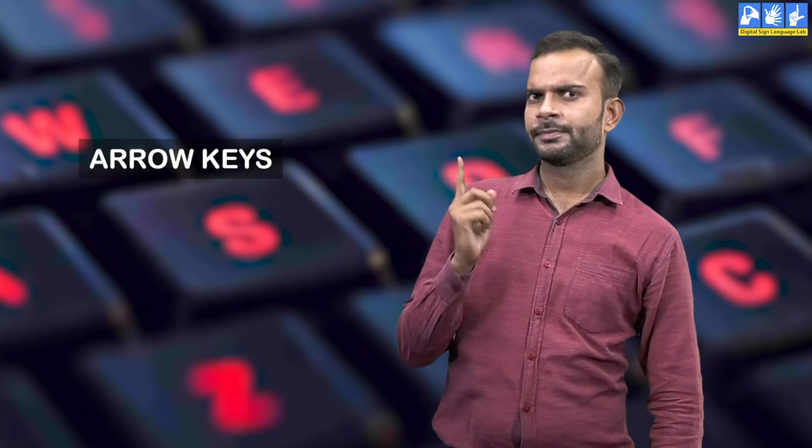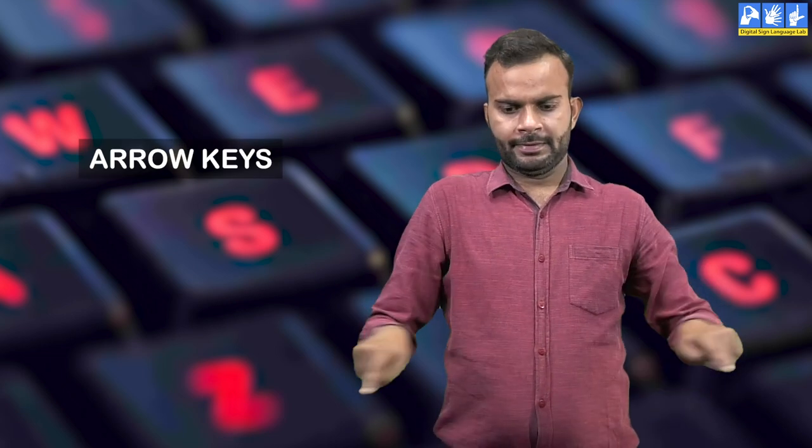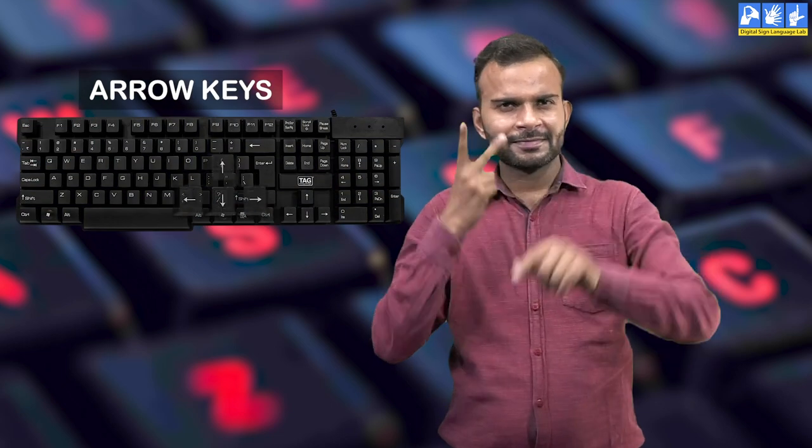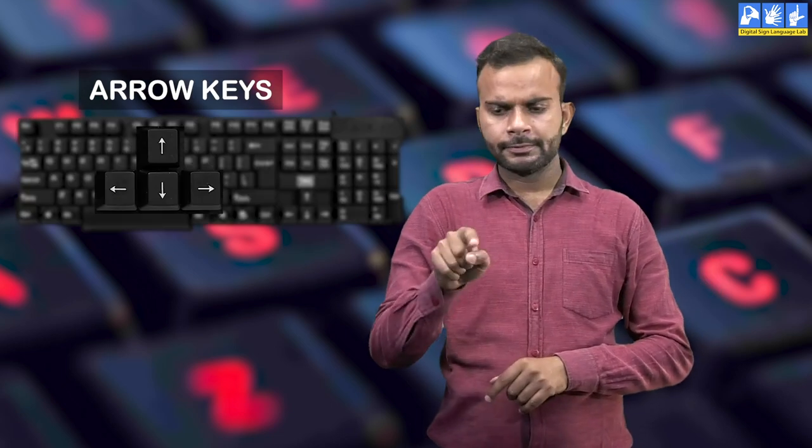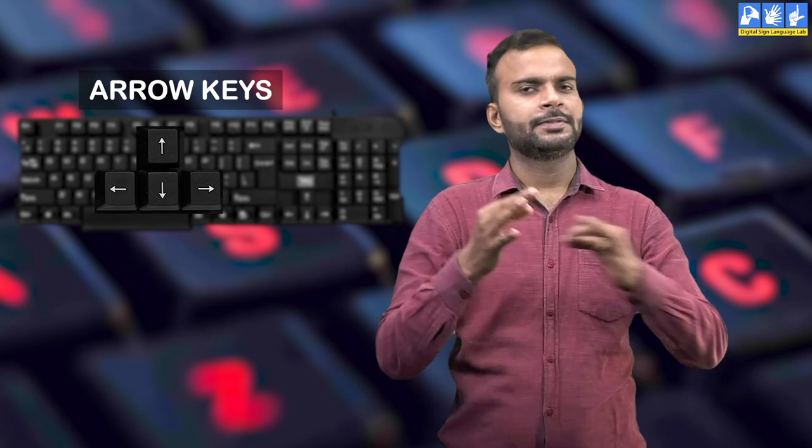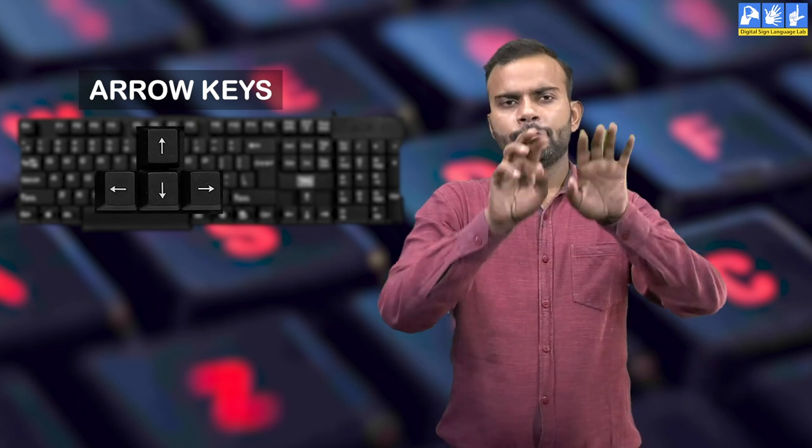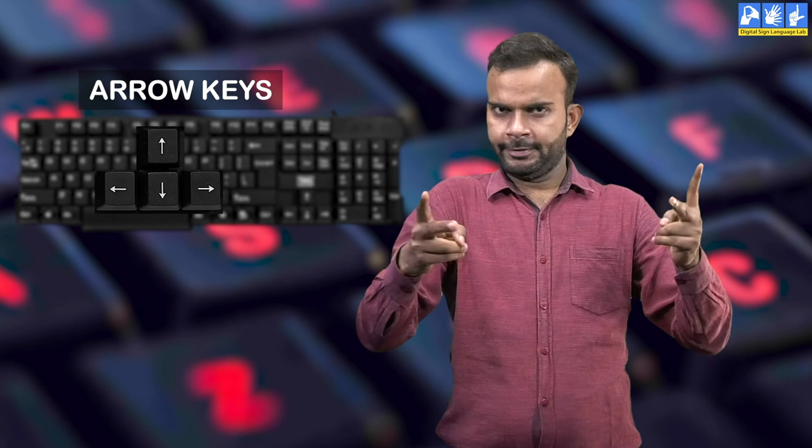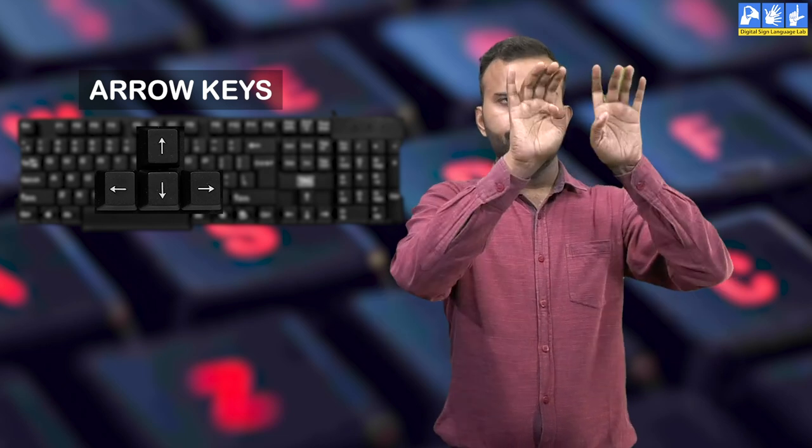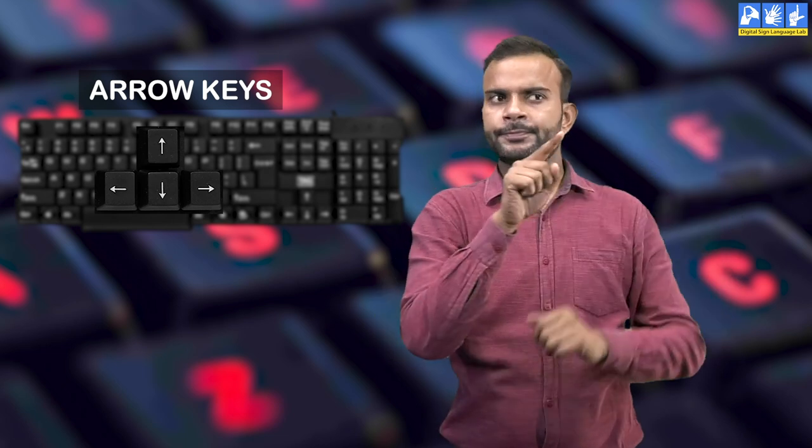Arrow keys. There are four arrow keys called right, left, up, and down on the right side of the keyboard. They are called cursor control keys. These keys are used to move the cursor on the screen.